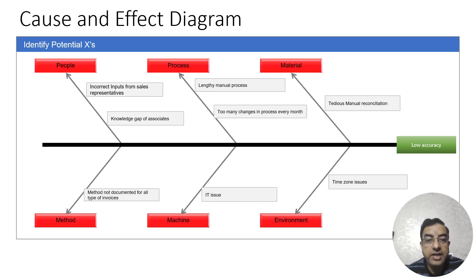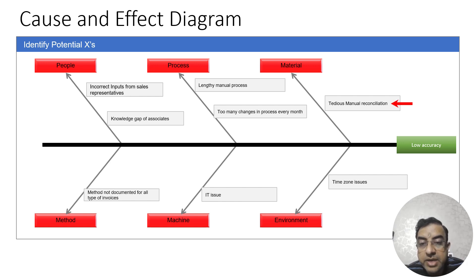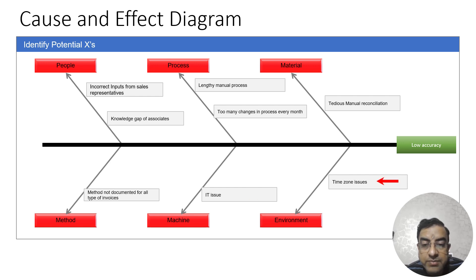The next thing the team did was to identify the potential causes of the problem. The potential causes of low accuracy included: incorrect inputs from sales representatives, a knowledge gap of the associates who were processing those invoices, the process being lengthy and manual, too many changes in the process every month leading to errors, a tedious manual reconciliation process, the process not being documented for all types of invoices, IT issues, and time zone issues.